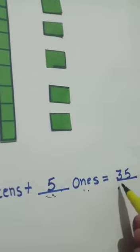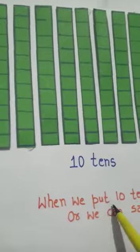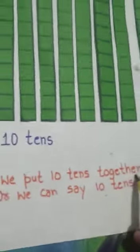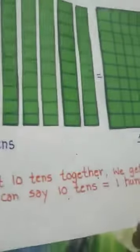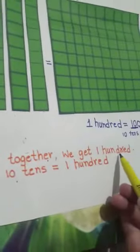What number do we have now? We have thirty-five. And when we put ten tens together, we get one hundred.